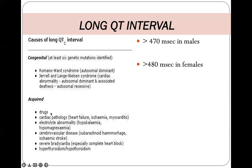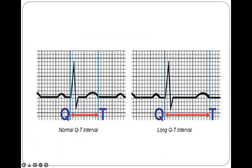Electrolyte abnormalities such as hypokalemia, as well as hypothyroidism, hypothermia, and cerebrovascular accidents like subarachnoid hemorrhage or ischemic stroke can all produce QT prolongation.